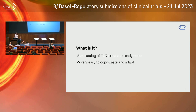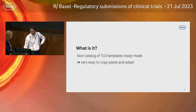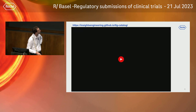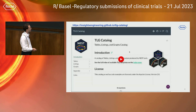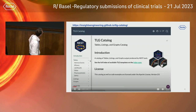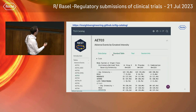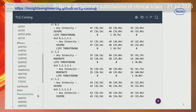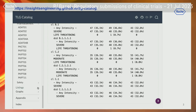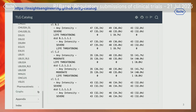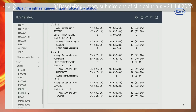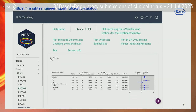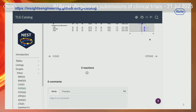The TLG catalog is a vast catalogue of TLG templates already made and very easy to copy, paste, and adapt. In this video walkthrough of the website, you can see all the tables: adverse events, efficacy, lab results. All these codes are internals from Roche that have been open-sourced. We have listings for pharmacokinetics and other topics, and graphs including Kaplan-Meier plots. You can see the data setup and the standard plot code — just open it, copy it, and run it on your machine. You can also search for specific tables like CoxT01, see a small introduction, change the color, and leave comments.